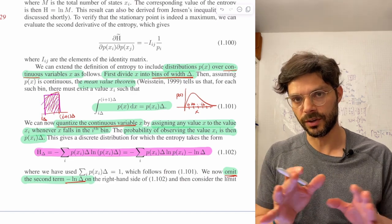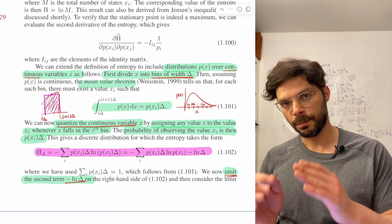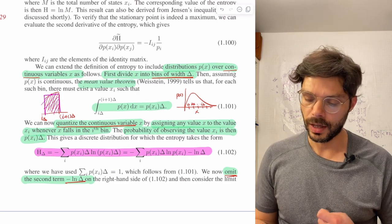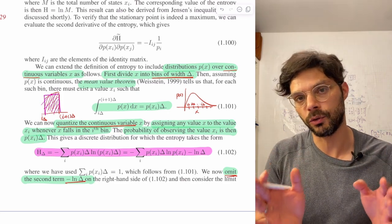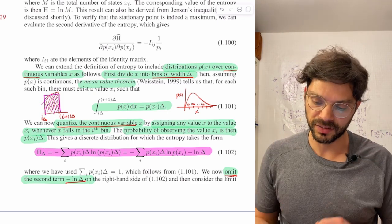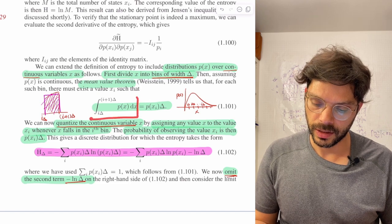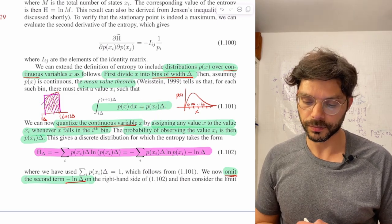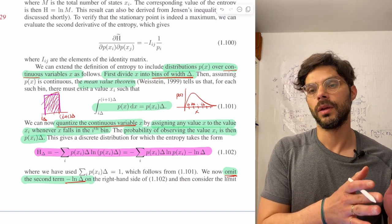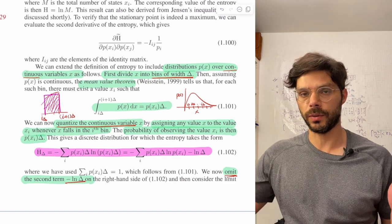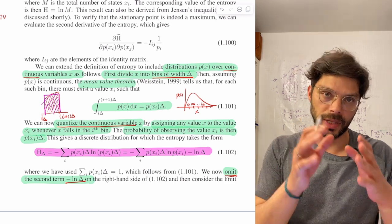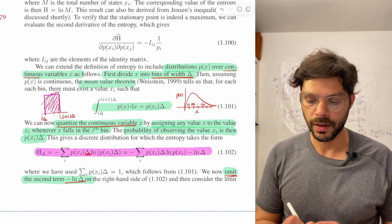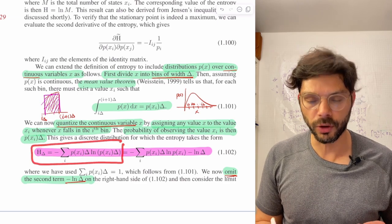We need to assign a probability to p of xi. The value we assign to our discrete distribution at xi is going to be this integral, which equals p of xi times delta. So now we have a bunch of discrete points x1, x2, and however many we need, and their probabilities are p of the continuous distribution at that point times delta. Then we just plug into our normal expression for entropy.